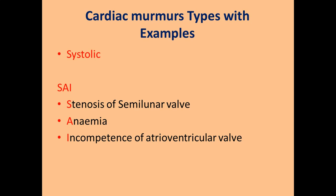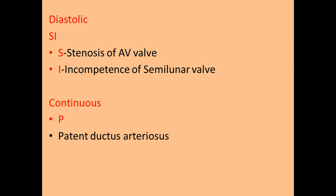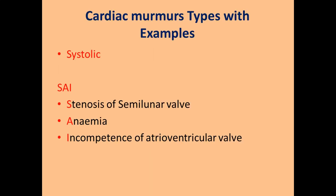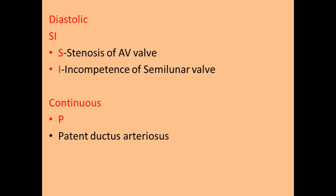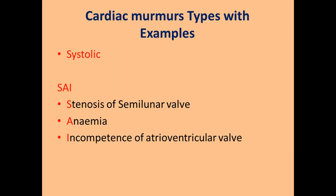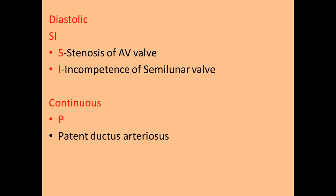For diastolic murmur, the mnemonic is SI — sensory integration. S stands for stenosis of AV valve and I stands for incompetence of semilunar valve. You can see here: stenosis of semilunar valve leads to systolic murmur, and incompetence of atrioventricular valve leads to pansystolic murmur, while stenosis of AV valve gives diastolic murmur. Continuous murmur is your patent ductus arteriosus.